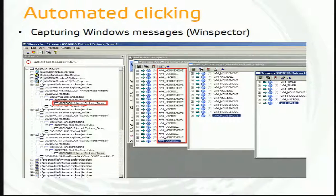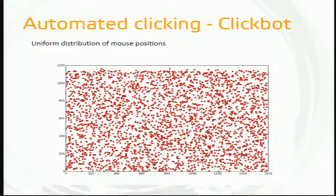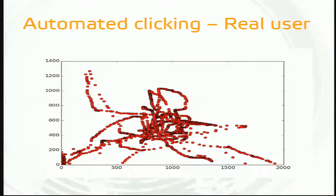We were especially interested in messages related to mouse movements — this message is called WM_MOUSEMOVE. We recorded these messages, extracted the coordinates, and could see that the distribution of mouse movements has a uniform distribution: the mouse is located uniformly and randomly all over the screen. This quite differs from a real user — for example, when we asked a real user to check their email, most activity was concentrated in the middle of the window, and the user seldom moved to the border parts of the screen.